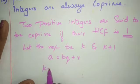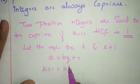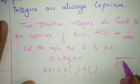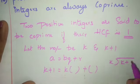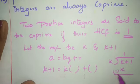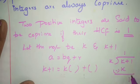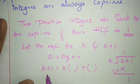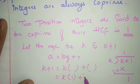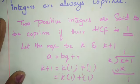Apply Euclid's division lemma: k+1 = k × q + r. Divide k+1 by k. k × 1 is k, subtract from k+1 to get remainder 1. So quotient is 1 and remainder is 1.